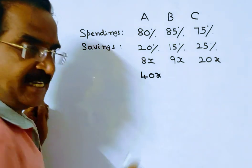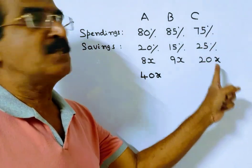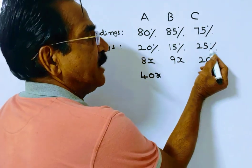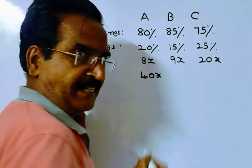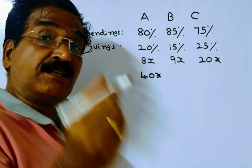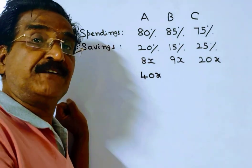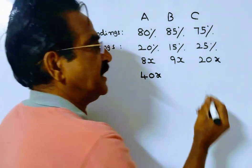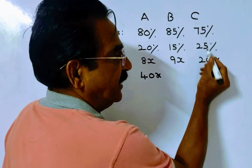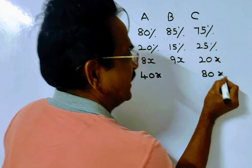This is A's income. Friends, coming to C's income. C saves 25% of his income. Actually, C's savings are 20x. So 25% of C's income is 20x. So we can find 100% of C's income from this.